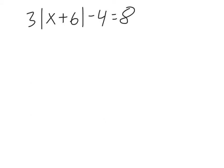Alright, here's another example. So again, we need to undo everything that's happening to this absolute value here. So we're having it subtracted by 4 and multiplied by 3. So we sort of have to work with this absolute value as if it's just a variable on its own. So first, let's get rid of the minus 4.